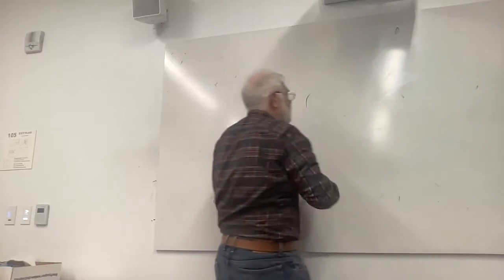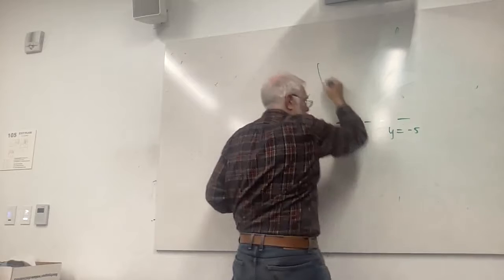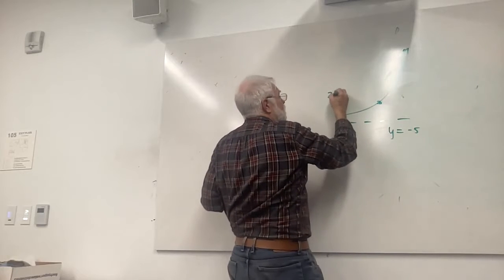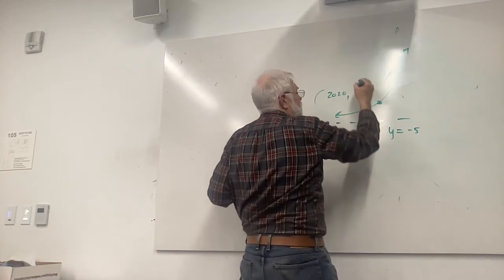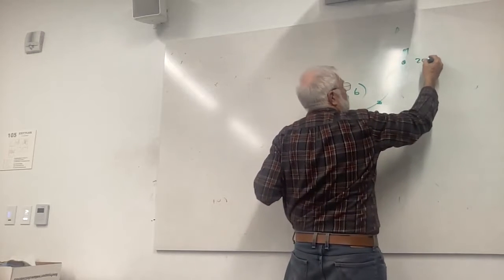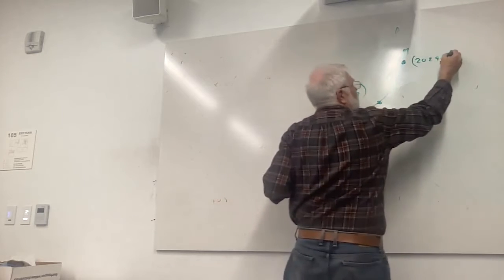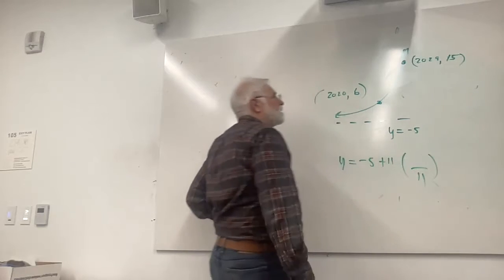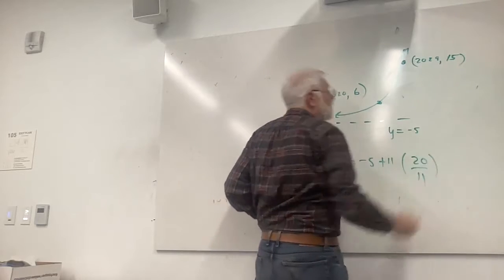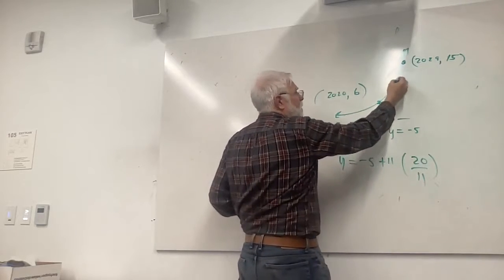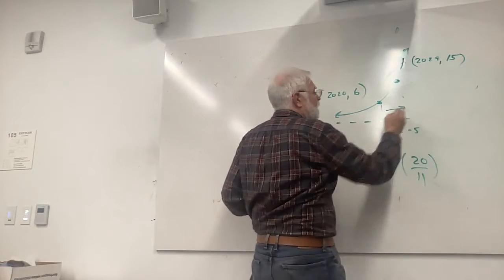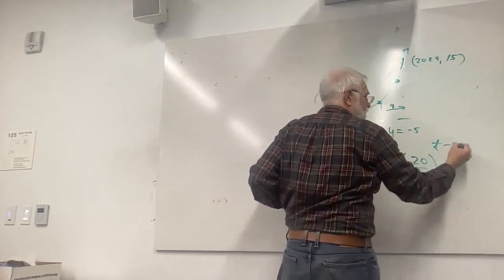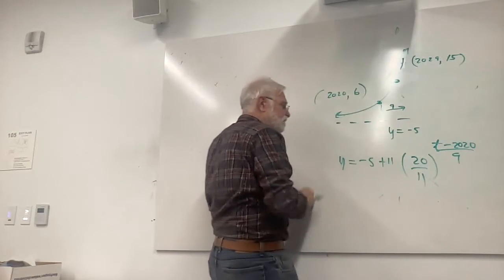Do another exponential growth. Let's say y equals minus five. Growth. Oh, I drew decay. I am tired. So that's going to be 2020. There were six of these things. And 2029, let's go up to 15. We got y equals negative five. To get to six, I got to add 11. Negative five to 15 is a jump of 20. So I got a bit of a doubling function. And I got to make a zero out of 2020. T minus 2020 over nine.